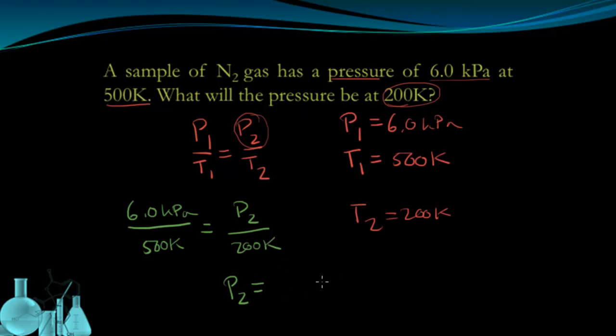P2, if we go through the algebra, is 2.4 kPa. The temperature went down, and very clearly, the pressure went down as well. So this number makes sense.